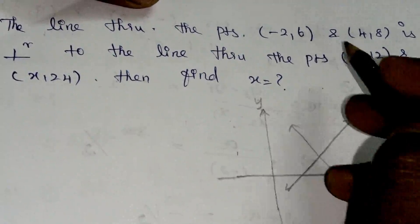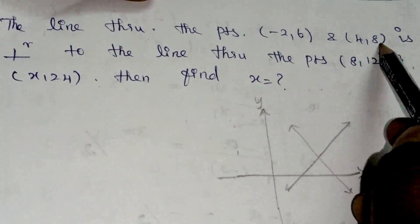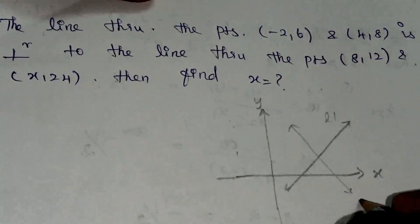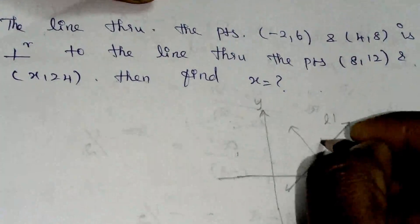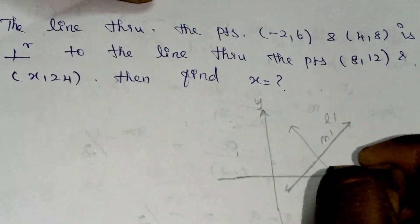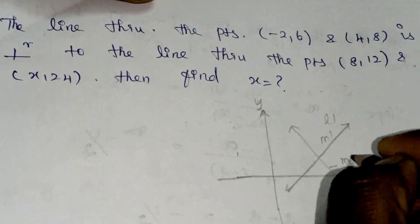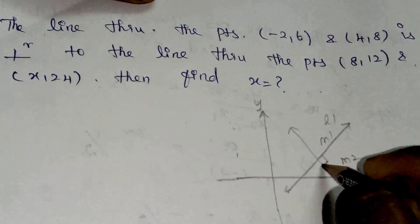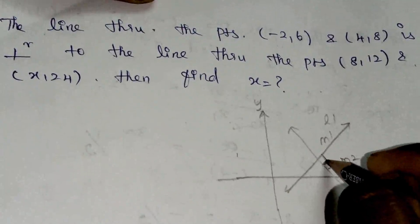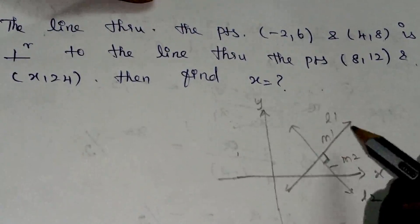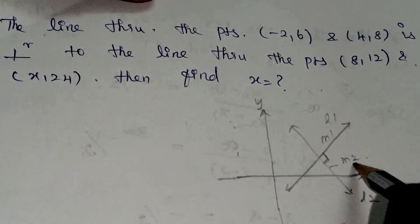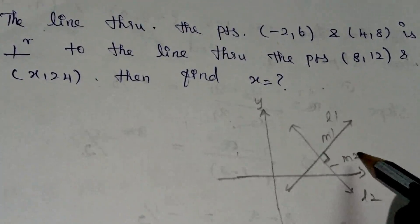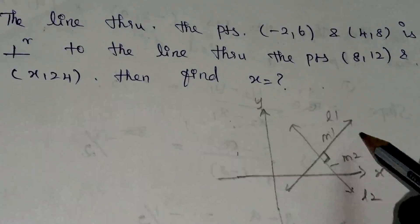The first line passes through minus 2 comma 6 and 4 comma 8 — let this be Line 1. Let this other line be Line 2. So this slope is m1 and the other slope is m2. Now, for perpendicular lines, m1 into m2 is equal to minus 1. That is the concept we use.